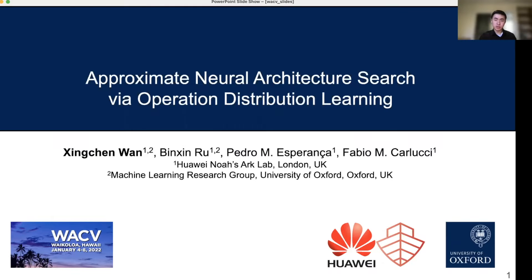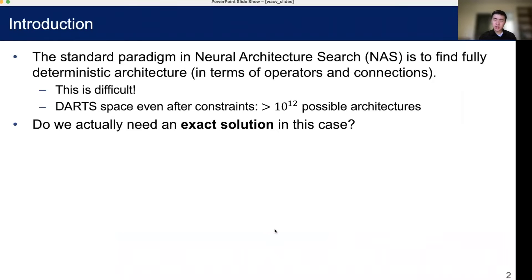Today I'm presenting our paper on approximate neural architecture search by operation distribution learning. The standard paradigm in NAS is to find deterministic architecture in terms of operators and connections. In a standard search space, this could lead to more than 10 to the power of 12 possible architectures, which is very difficult. So the question is, do we actually need an exact solution in this case?